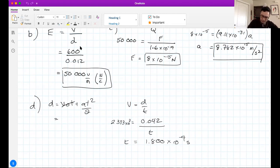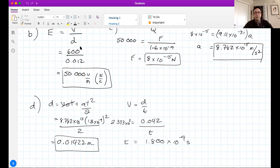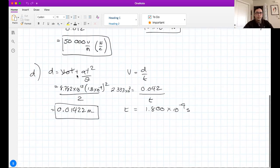So acceleration was 8.782 × 10¹⁵, time 1.8 × 10⁻⁹ squared, don't forget, divided by 2. Unless I made a mistake, I previously calculated that I got 0.01422 meters. That's 1.4 centimeters, and that's at the plates.